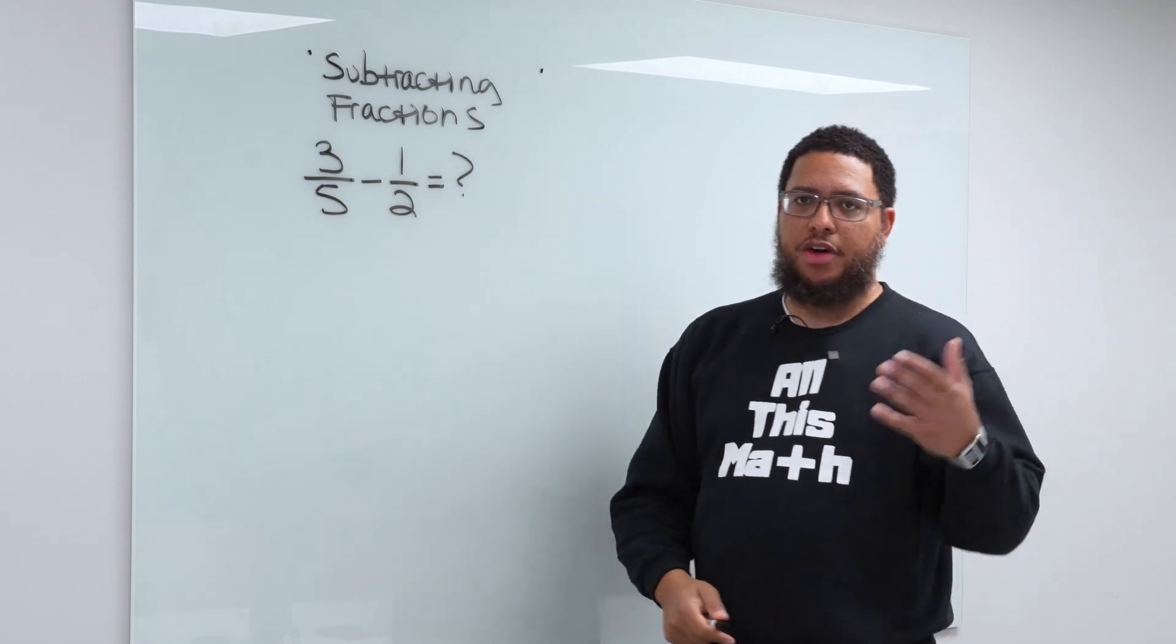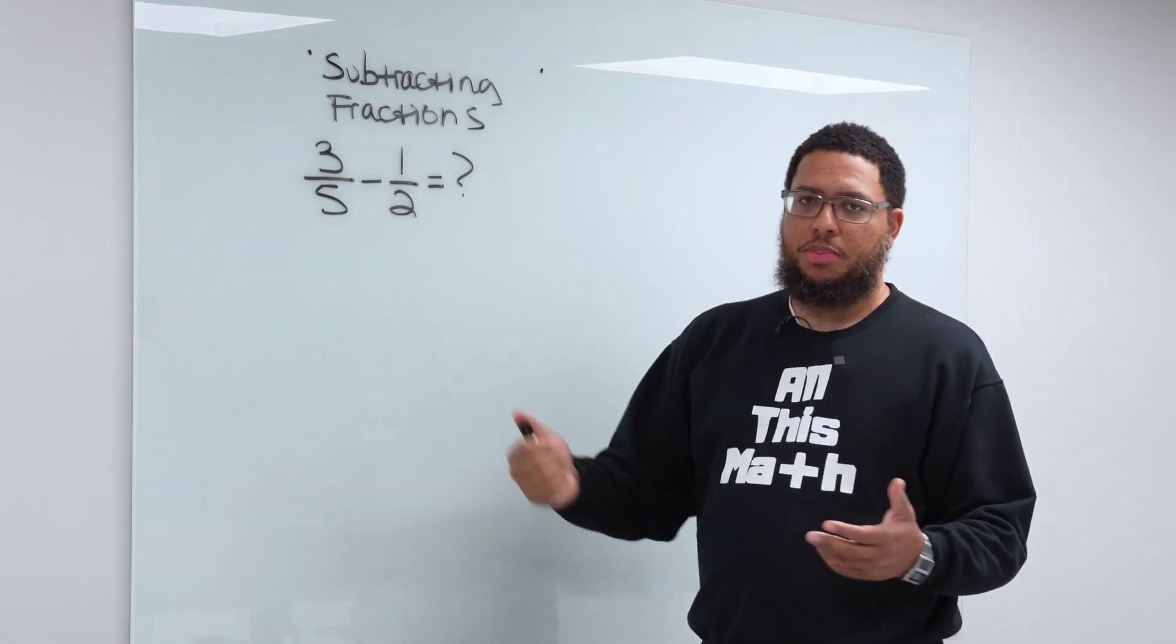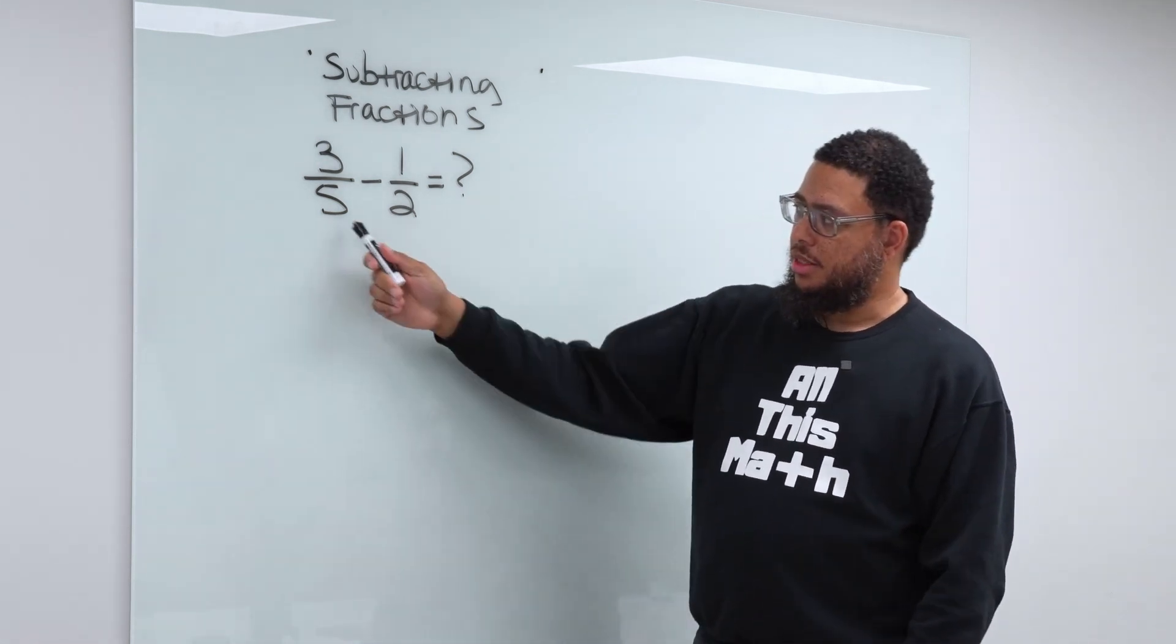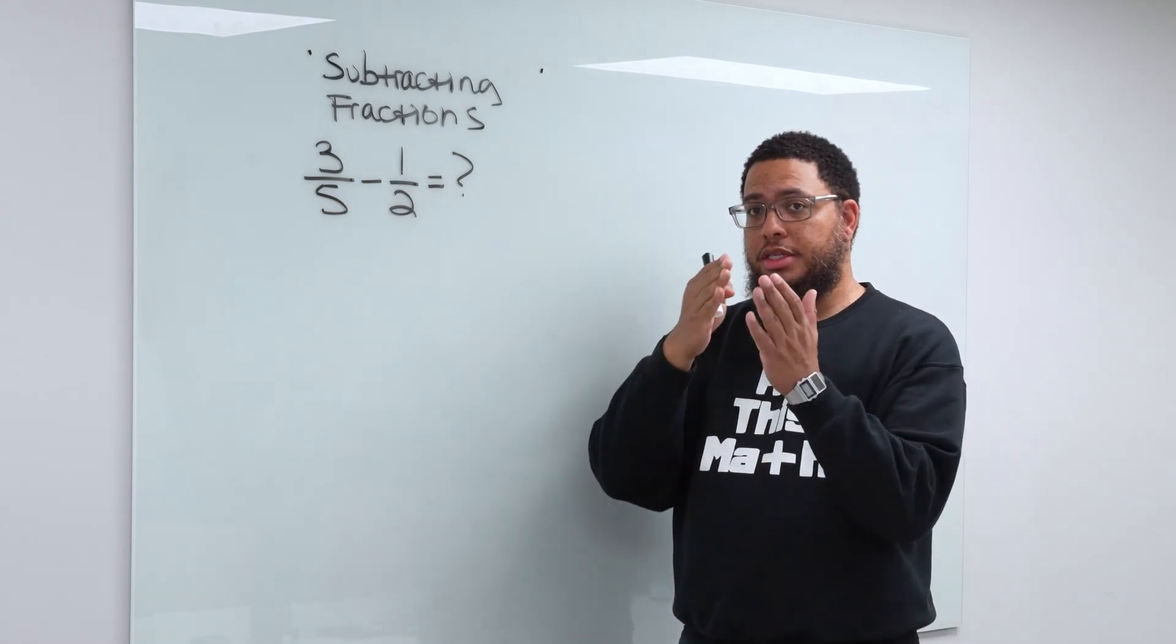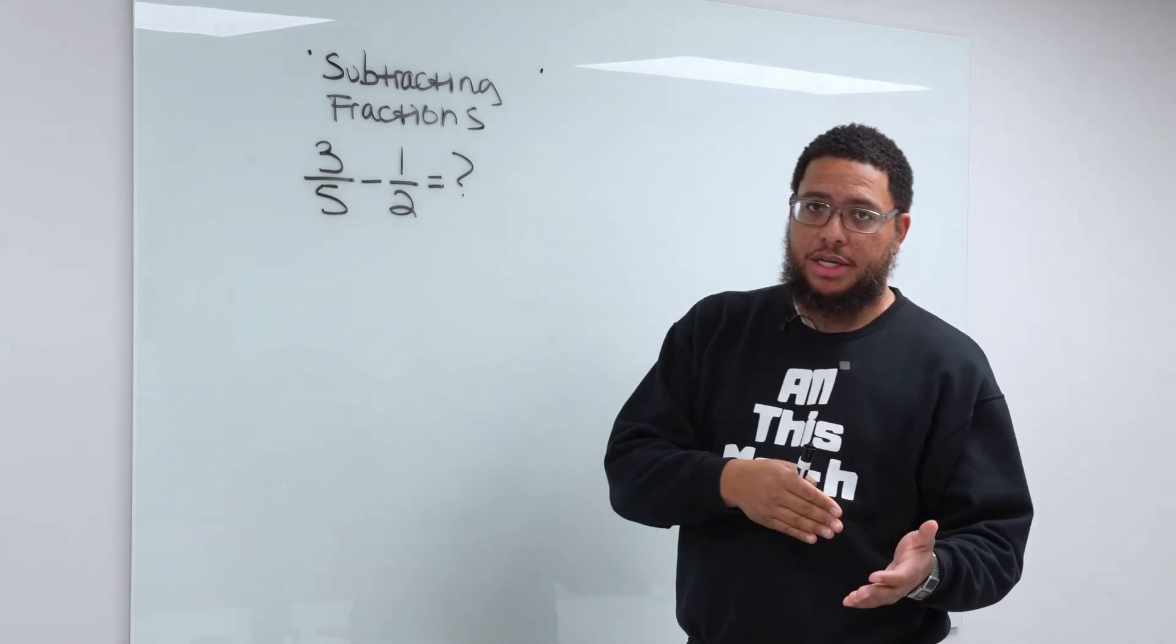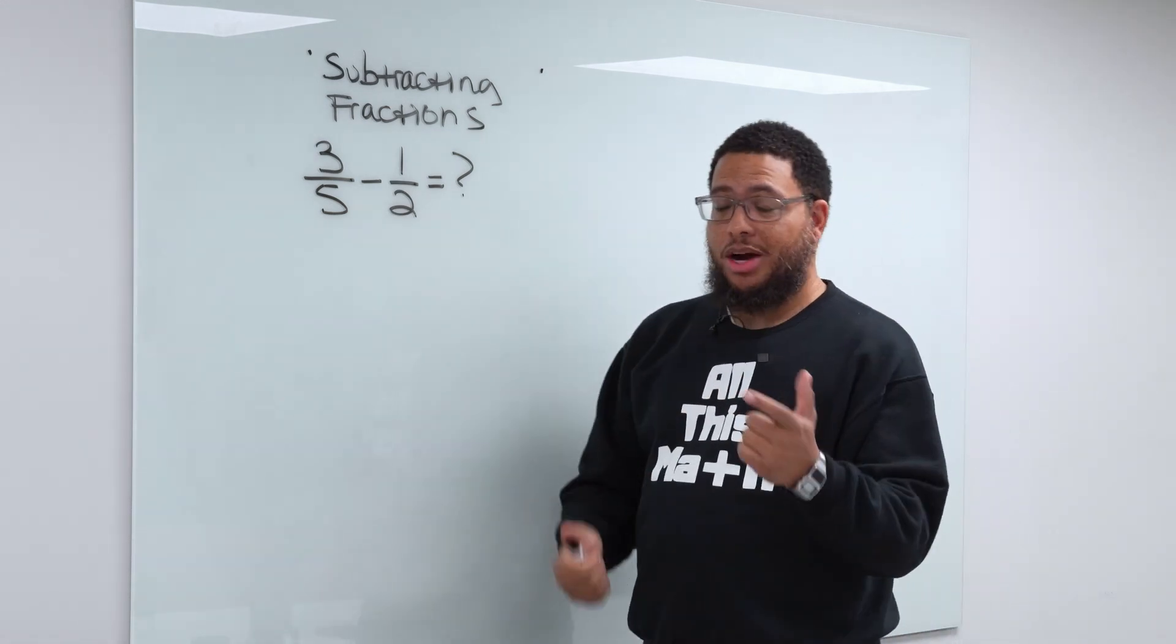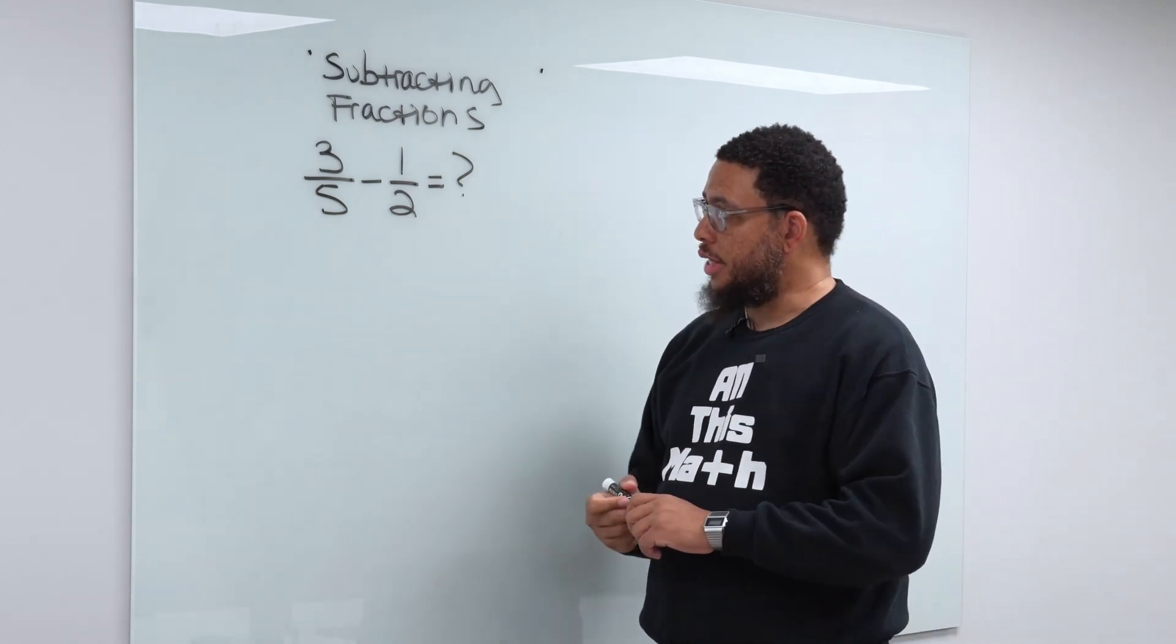It's almost like saying if I have $5, how do I take away six pesos from $5? It's not the same currency. A denominator is like currency. So you got to have the same currency in order to actually do subtraction or addition. We can multiply or divide without the same denominators, but we can't do addition or subtraction.